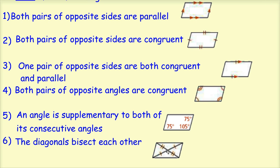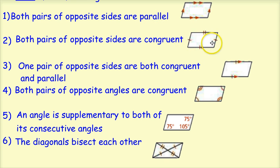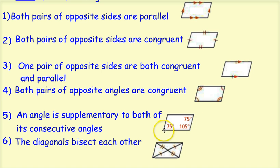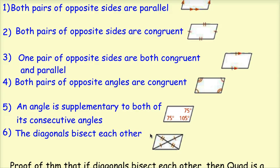So these are very similar to yesterday's properties. The only one different is number 3 — if you can show that one pair of opposite sides are congruent and parallel, that's enough. Otherwise they're the same: both pairs of opposite sides parallel; both pairs of opposite sides congruent; one pair congruent and parallel; both pairs of opposite angles congruent; an angle supplementary to both of its consecutive angles; or the diagonals bisect each other.